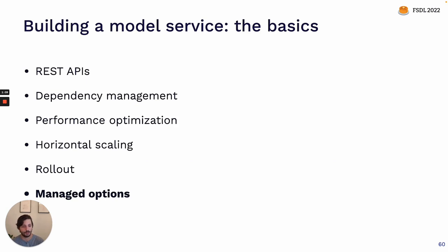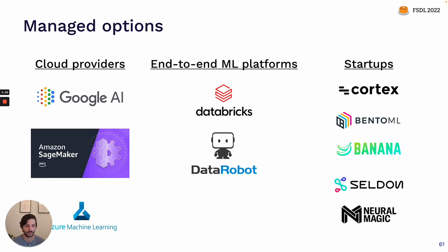Managed options take care of a lot of the scaling and rollout challenges you would otherwise face if you host models yourself. There are a few different categories: cloud providers all provide their own managed options, as well as most of the end-to-end ML platforms. There are also startups — some more focused on developer experience like BentoML and Cortex (Cortex recently was acquired by Databricks), and others focused on both ease of use and performance like Banana. To give you a feel of what these managed options look like, let's double-click on SageMaker, which is probably the most popular managed offering.